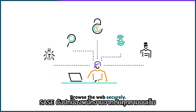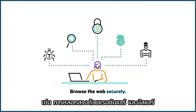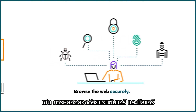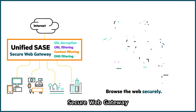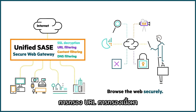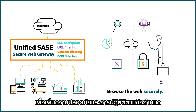SASE also protects employees from web-based threats like ransomware, phishing, and malware. Secure Web Gateway protects users with advanced SSL inspection, URL filtering, content filtering, and DNS filtering in real time for improved security and compliance.